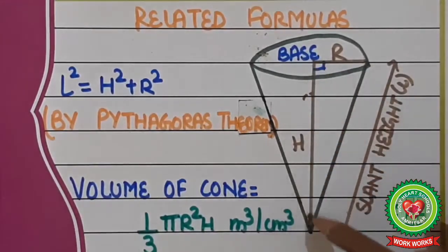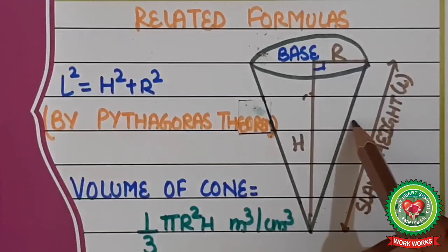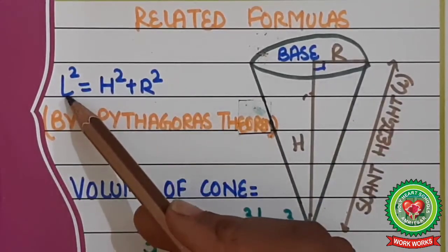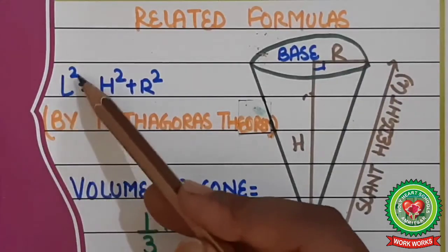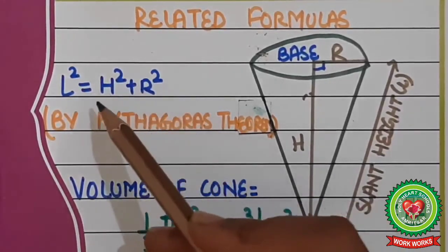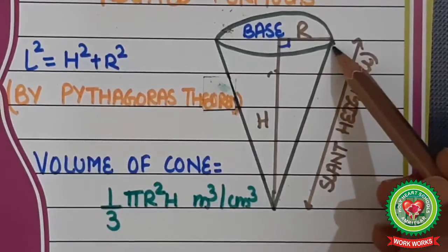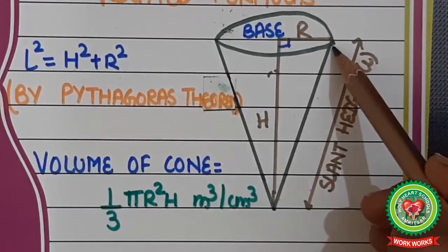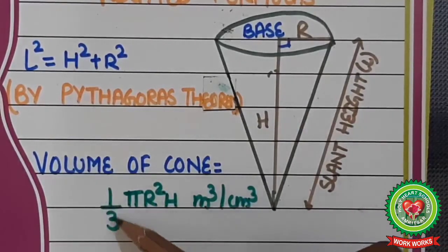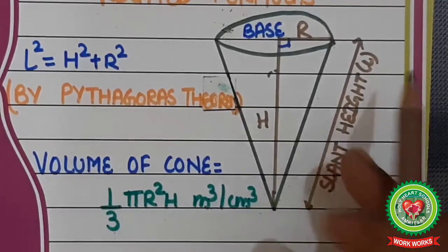Since this is a right-angle triangle, we can apply the Pythagoras theorem. The slant height L is the hypotenuse, so L² = H² + R². This is the first concept related to cone. Also, a cone is one-third of a cylinder, so the volume of a cone is one-third of the volume of a cylinder, that is (1/3)πR²H in m³ or cm³.